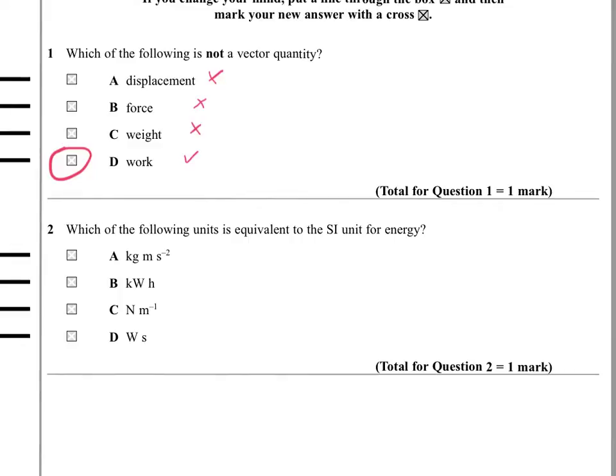Another bit of book work. Which of the following units is equivalent to the SI unit for energy? Kilograms times meters per second squared, well that's like mass times acceleration, that one's like force, so we'll rule it out. Kilowatt hours is energy, but it's not SI. Newtons divided by meters is a no as well. But watts times seconds, power times time will give you joules, so it's D.